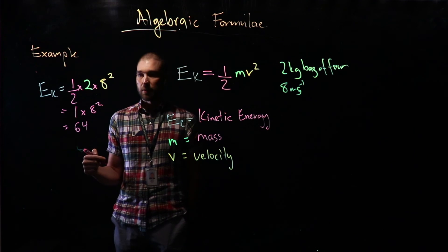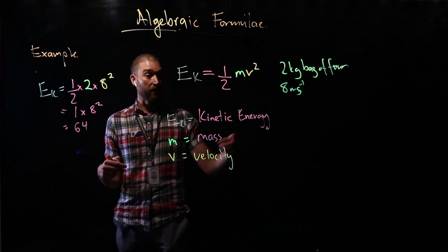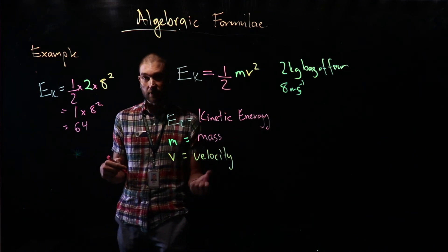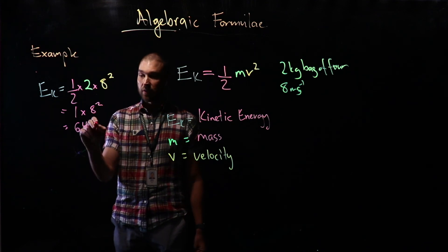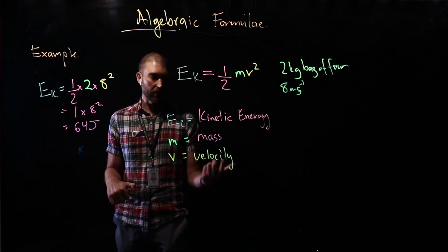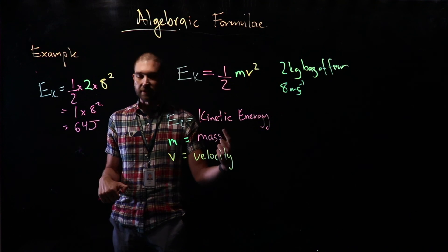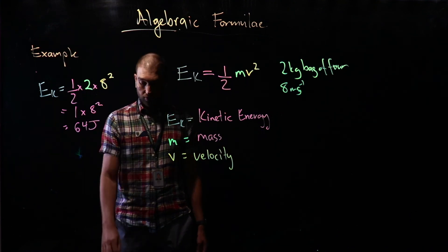In physics, we have units when we're measuring things. We have kinetic energy, mass, and velocity. Each of these has a unit. Our unit for energy is joules. Velocity is metres per second. Mass is kilograms. Our answer there is 64 joules.